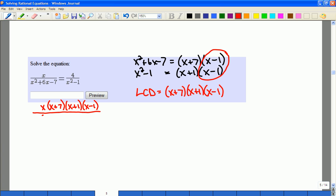Then on the bottom, I already know this factors to x plus 7 and x minus 1. So I can see right away these factors can be removed, and I have to do the same thing to the other side.